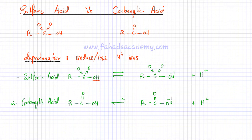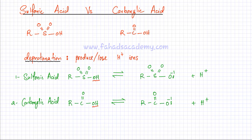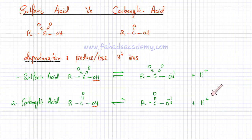Similarly, in the case of carboxylic acid, the OH group again ionizes and when it ionizes it produces an anion with oxygen having a negative charge, and an H⁺ ion is produced. So in both cases you're getting an anion. Now which one is a stronger acid?